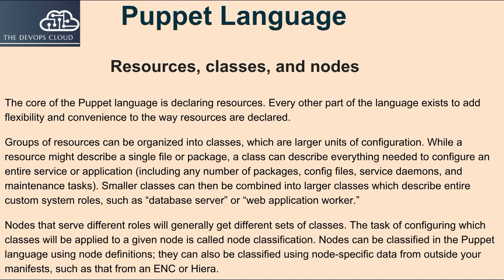Groups of resources can be organized into classes, which are larger units of configuration. While a resource might describe a single file or package, a class can describe everything needed to configure an entire service or application, including any number of packages, config files, service daemons and maintenance tasks. Smaller classes can then be combined into larger classes which describe entire custom system roles, such as database server or web application worker.